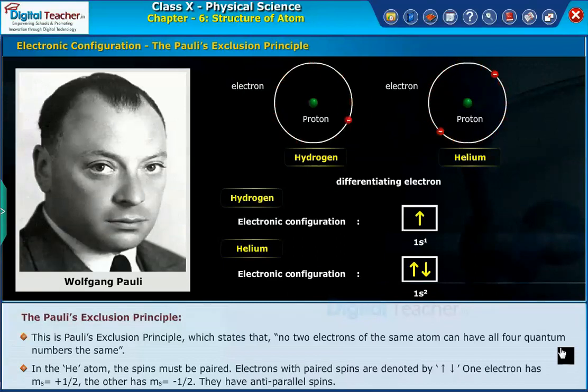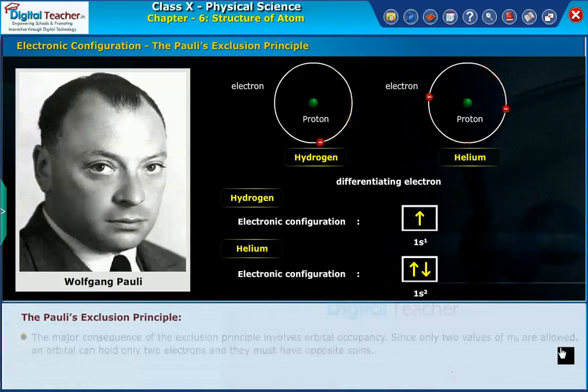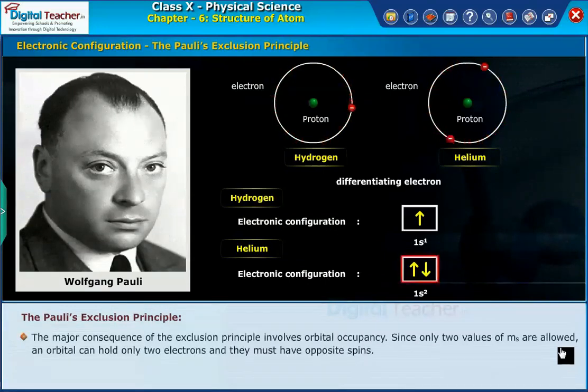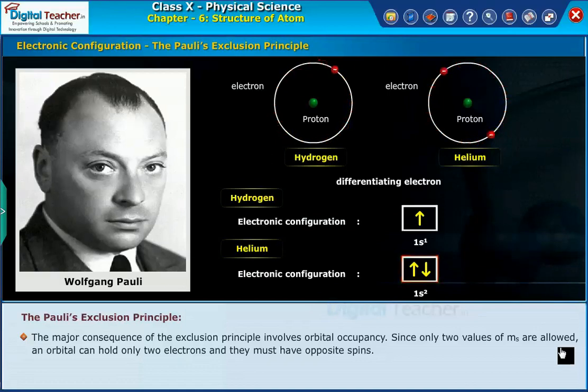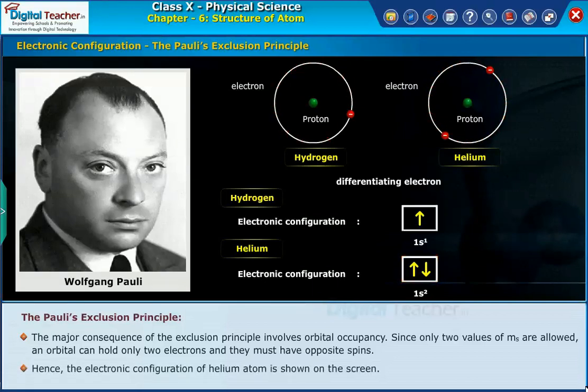The major consequence of the exclusion principle involves orbital occupancy. Since only two values of mₛ are allowed, an orbital can hold only two electrons and they must have opposite spins. Hence, the electronic configuration of helium atom is shown on the screen.